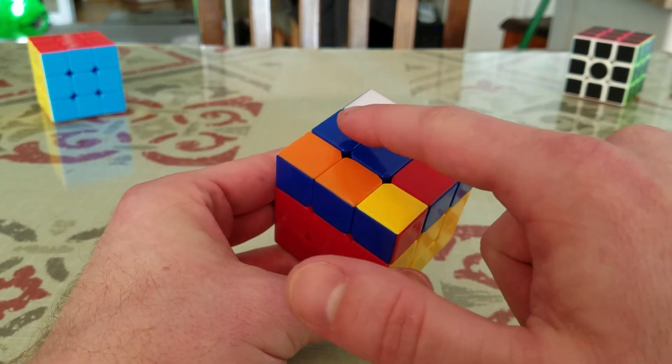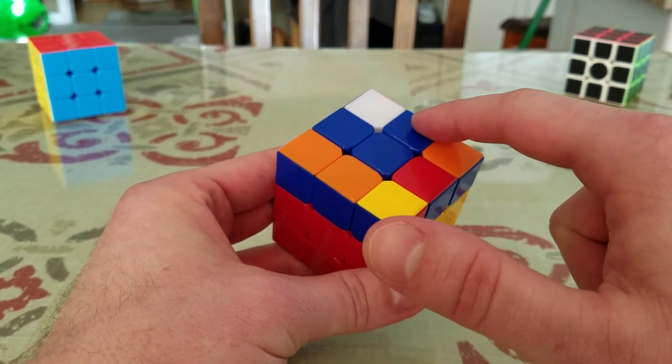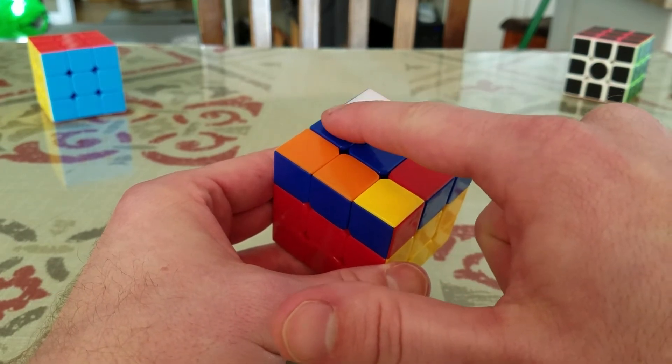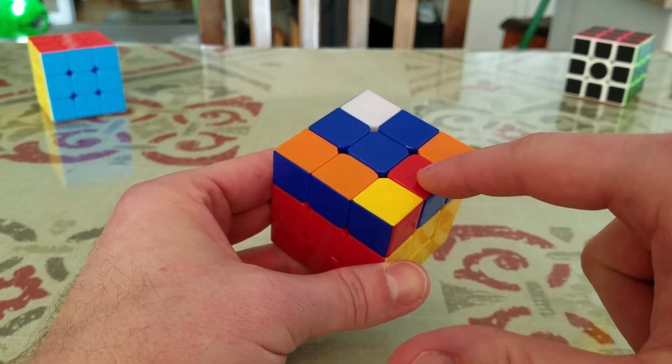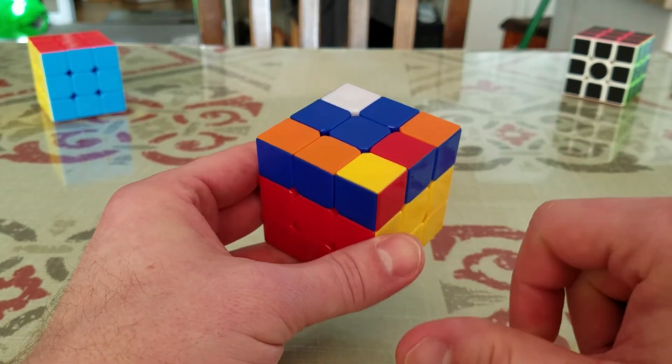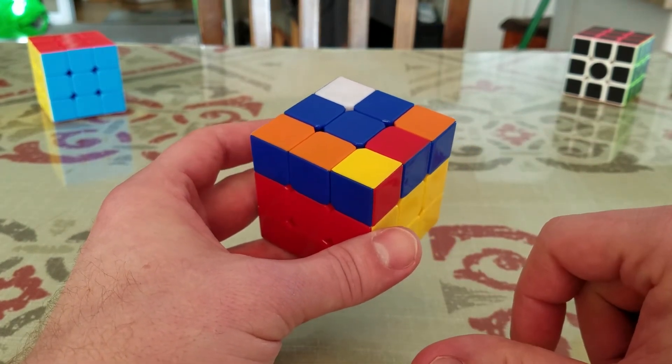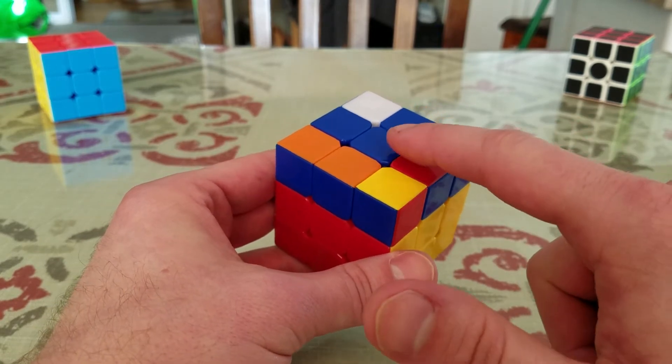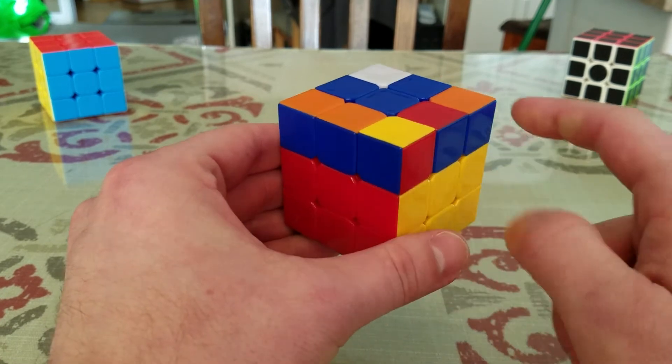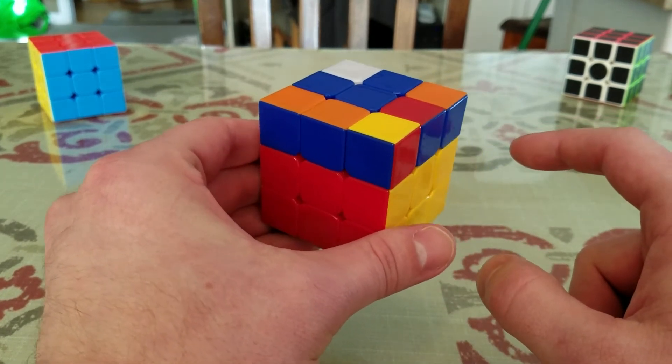You're going to either look for what I like to call this fishtail here, or you're going to see a blue line of three directly across the middle like here. So in this case I have the fishtail, so I'm going to take it so that the fishtail is pointing to the back left of my cube and I'm going to hold it like this.